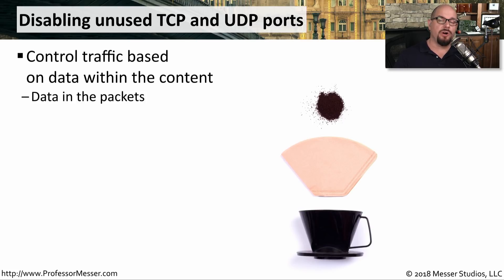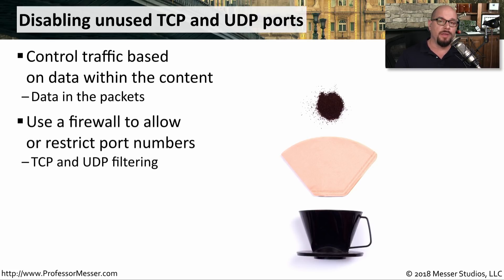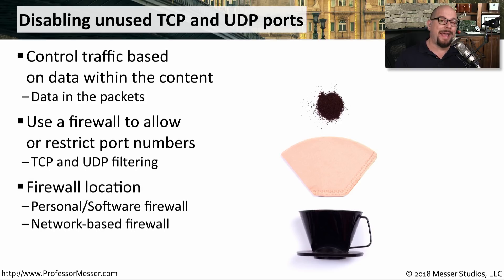Another good best practice for application and system hardening is to only allow network communication to the applications that require it. One way to do this is to provide content filtering of the packets going back and forth, commonly by restricting data based on TCP or UDP port numbers. This way, if another application is suddenly installed on your system, it won't be able to communicate over a port you're not using. It's very common to add this network filtering using the personal or software-based firewall already installed in the operating system, or you may have a network appliance examining all traffic to make these filtering decisions for all devices.